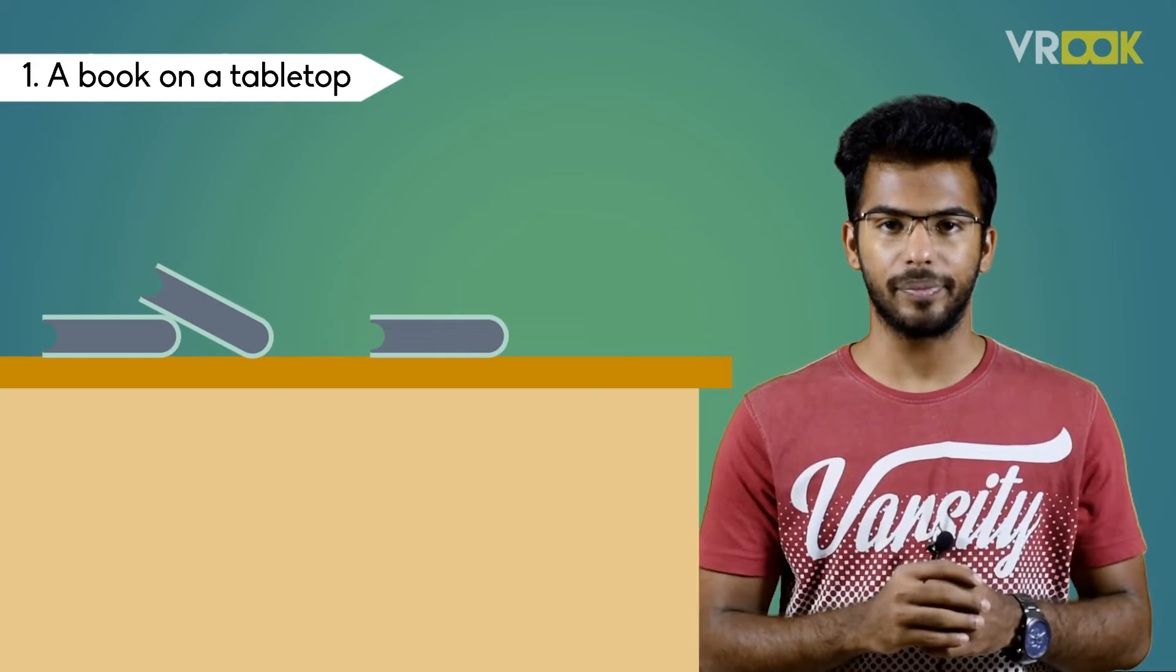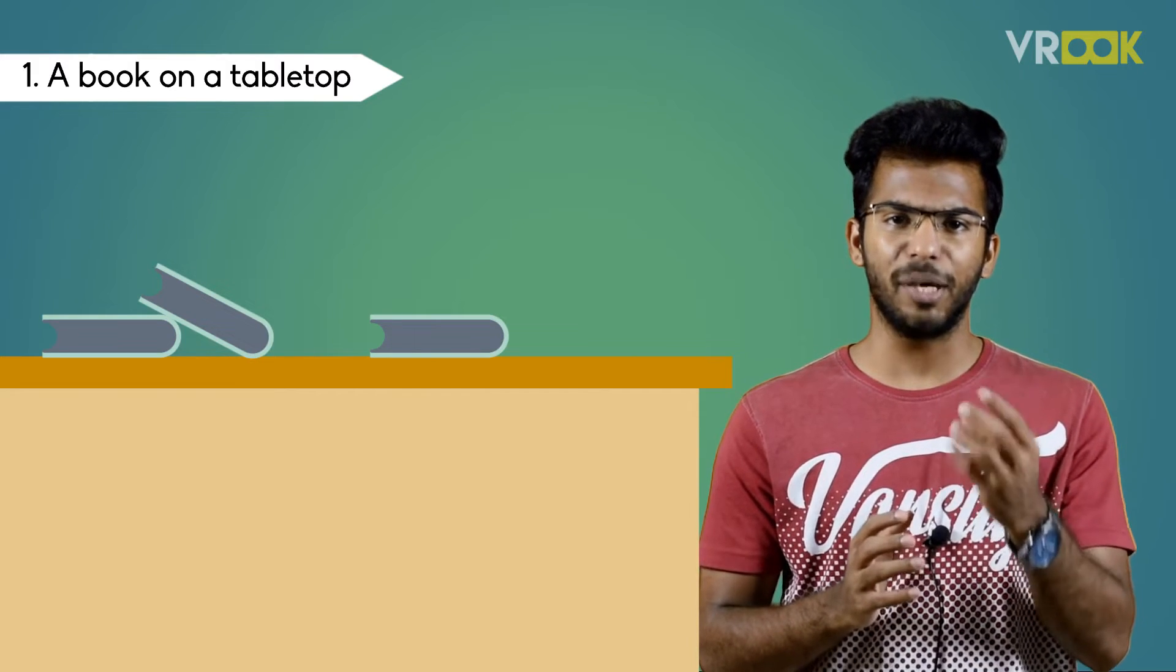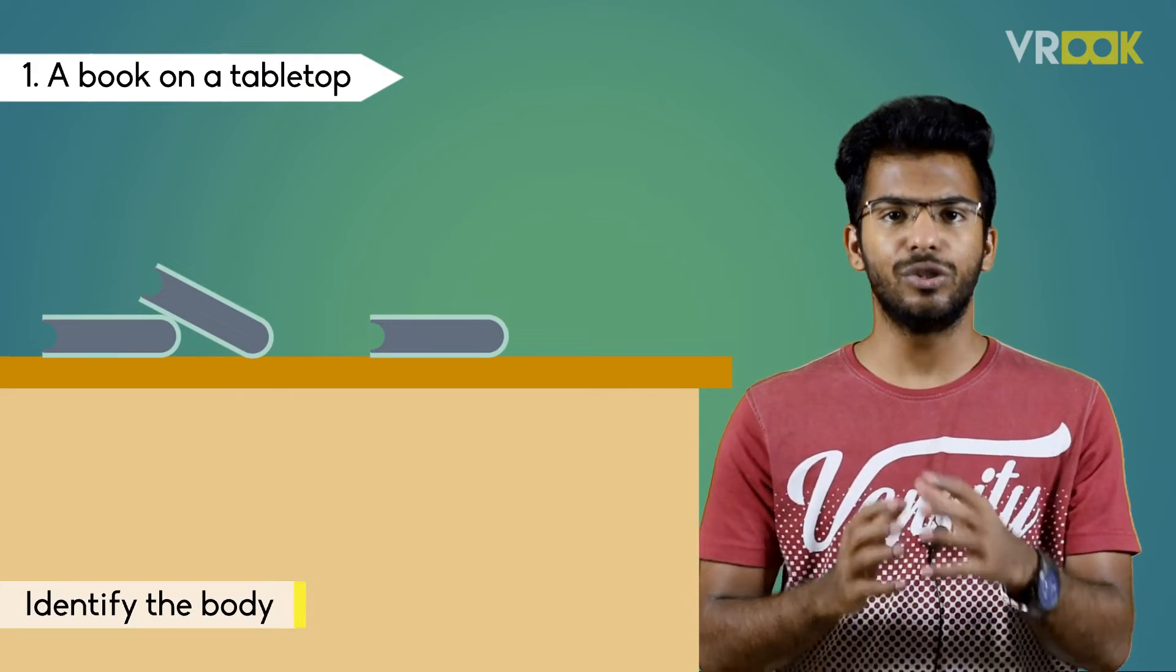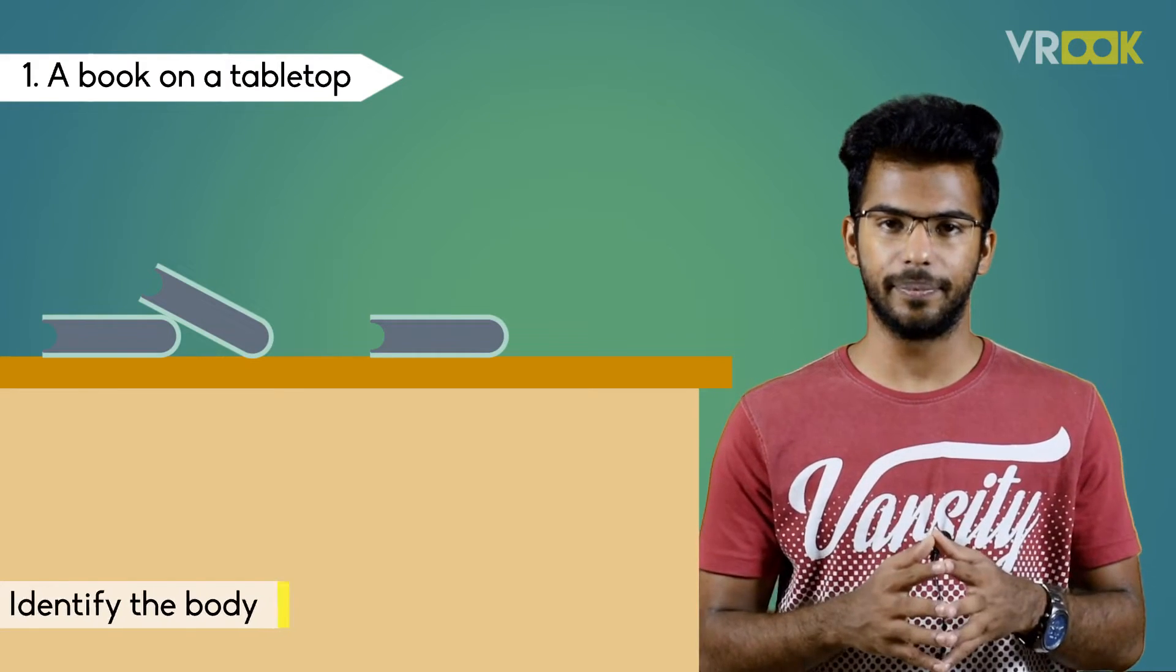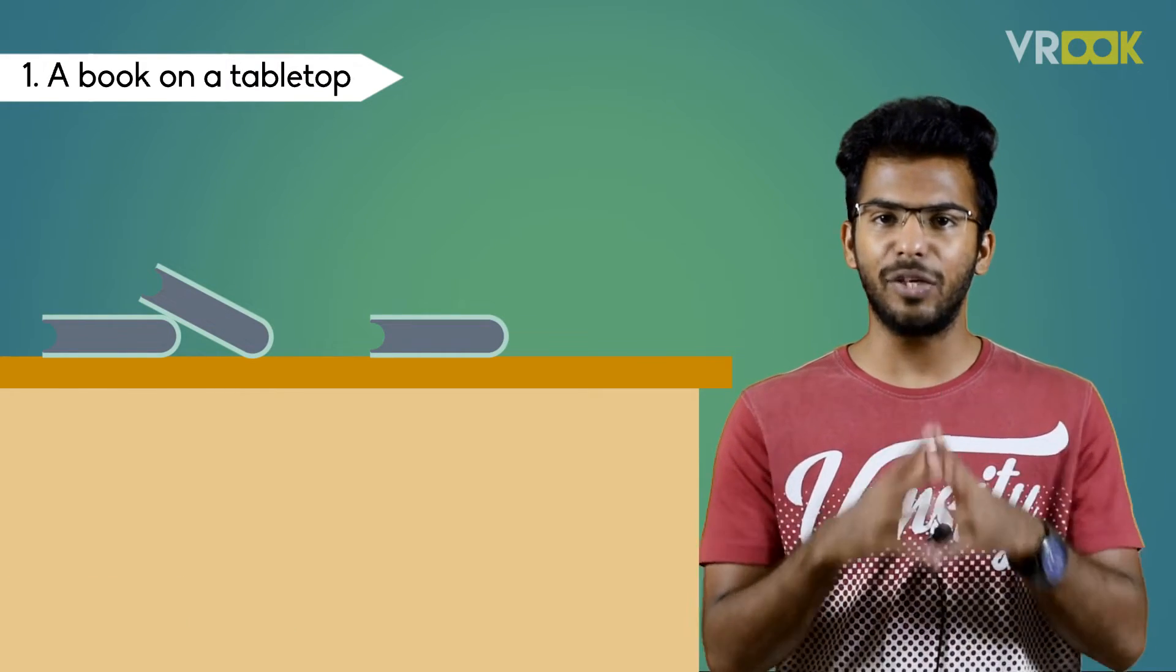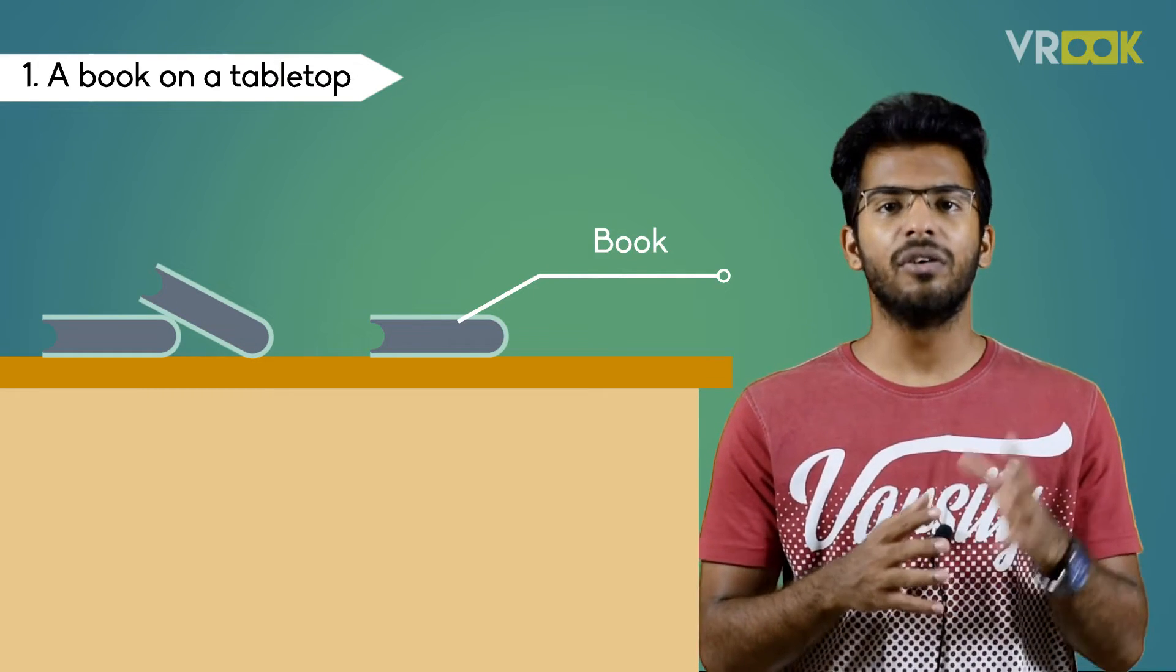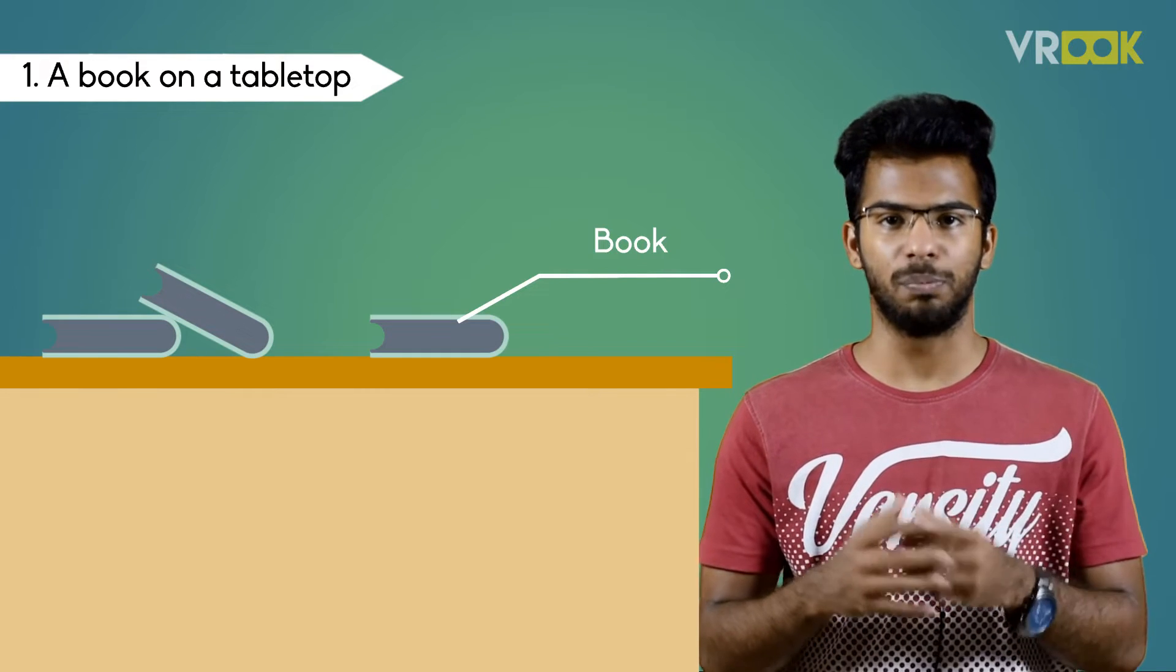Let us understand how to write free body diagrams through simple examples. Our first example is a book on tabletop. The first and foremost important step is to identify the body to write the free body diagram. In this example we need to analyze forces acting on the book, so we are writing free body diagram for this book.